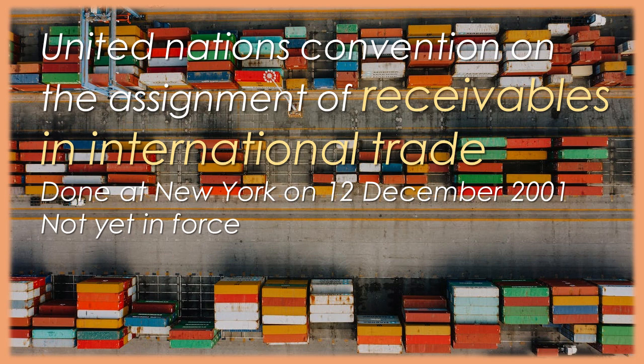Article 19. Agreement not to raise defences or rights of set-off. 1. The debtor may agree with the assigner in a writing signed by the debtor not to raise against the assignee the defences and rights of set-off that it could raise pursuant to Article 18. Such an agreement precludes the debtor from raising against the assignee those defences and rights of set-off. 2. The debtor may not waive defences: a. arising from fraudulent acts on the part of the assignee; or b. based on the debtor's incapacity. 3. Such an agreement may be modified only by an agreement in a writing signed by the debtor. 4. The effect of such a modification as against the assignee is determined by Article 20, Paragraph 2.